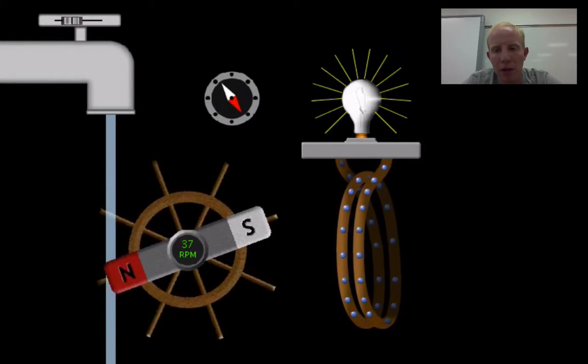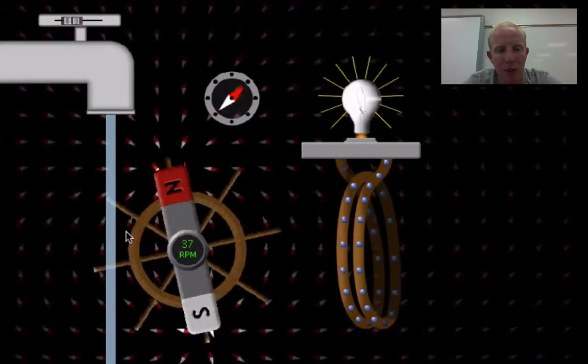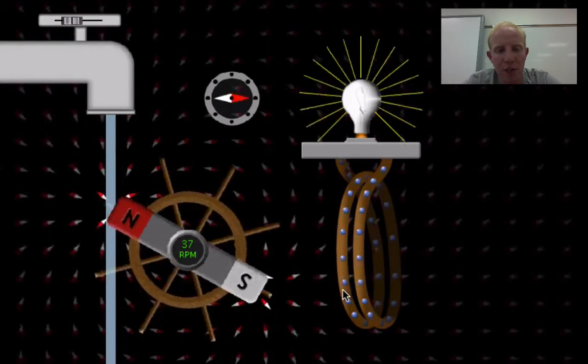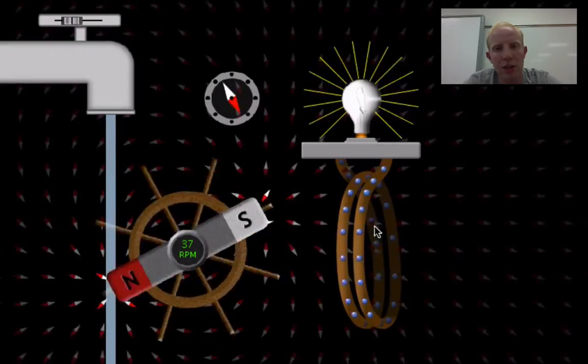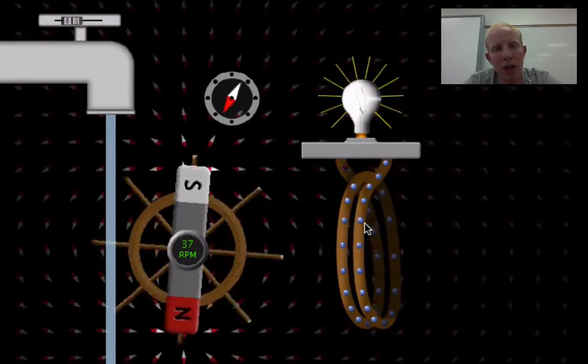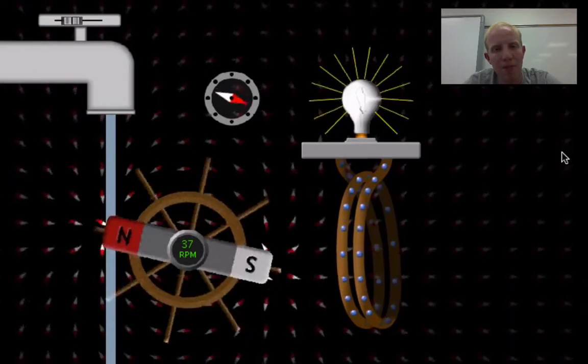If I show the field, you can see that the rotating magnet is constantly changing the magnetic field. Thus, a current is induced on those wires and then we get the light bulb to turn on.